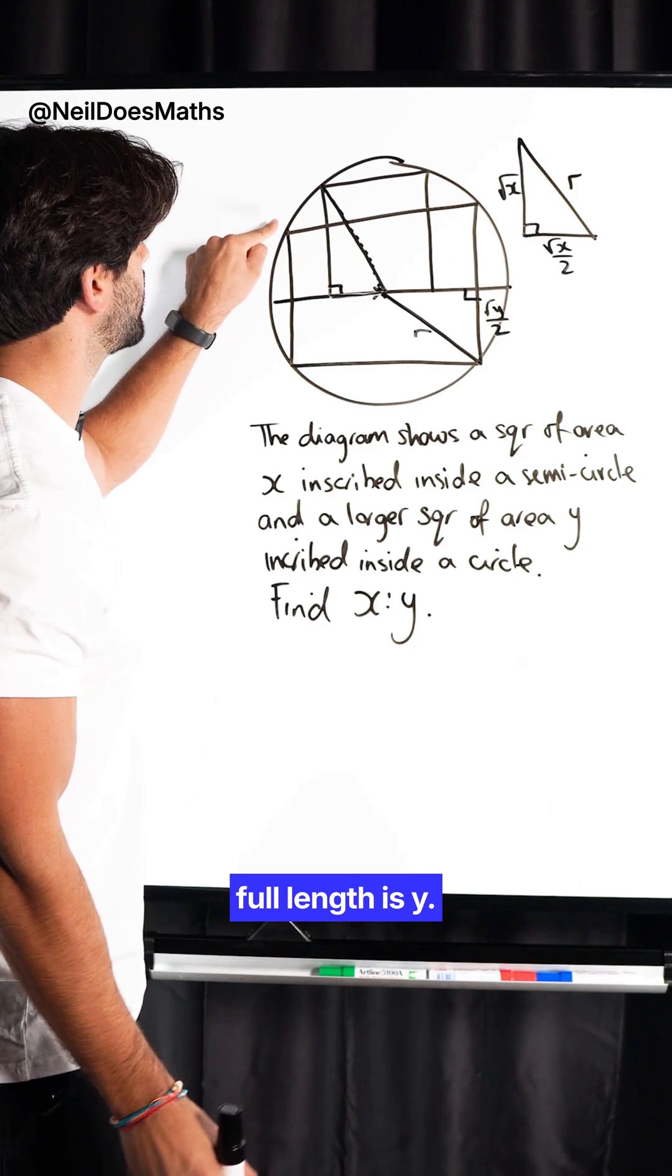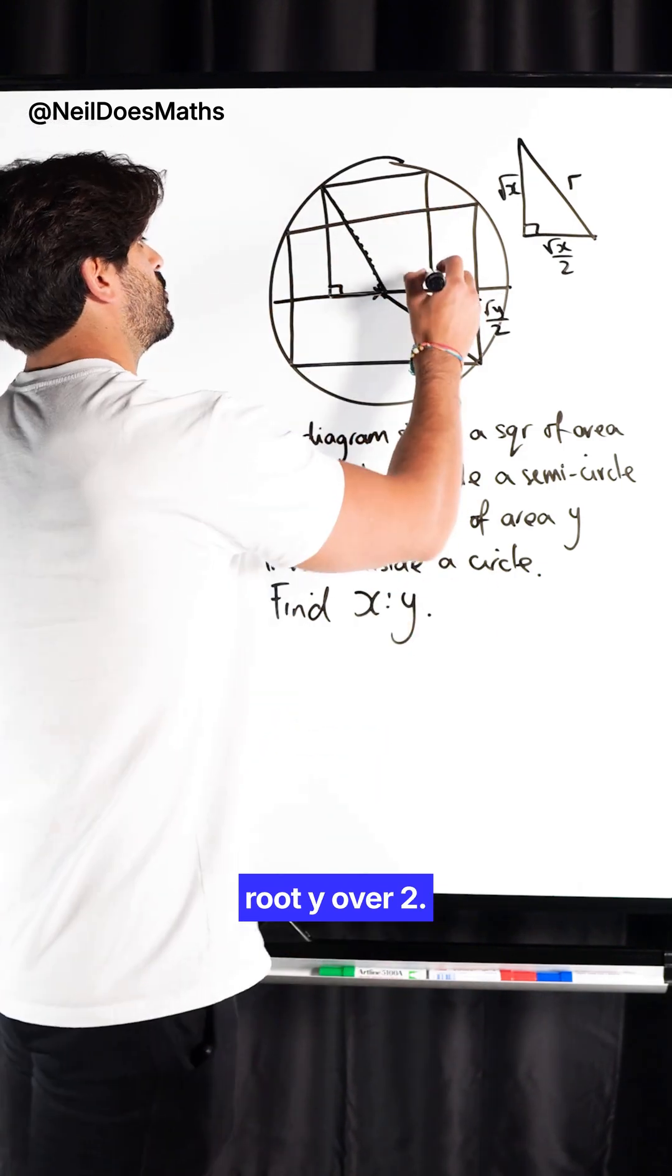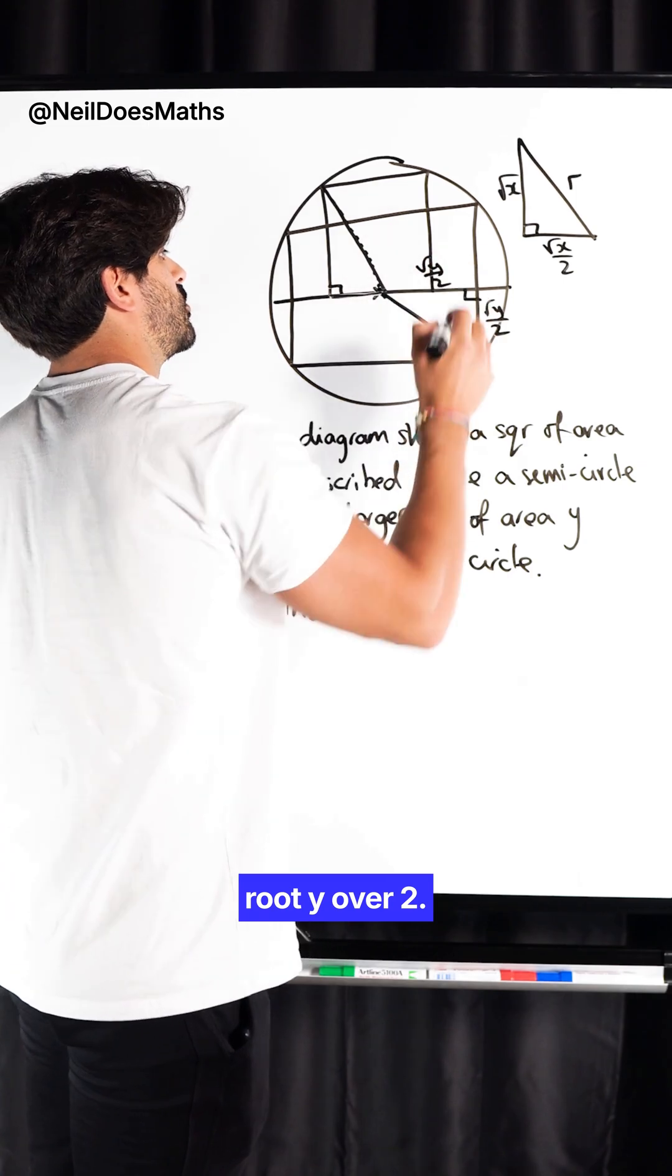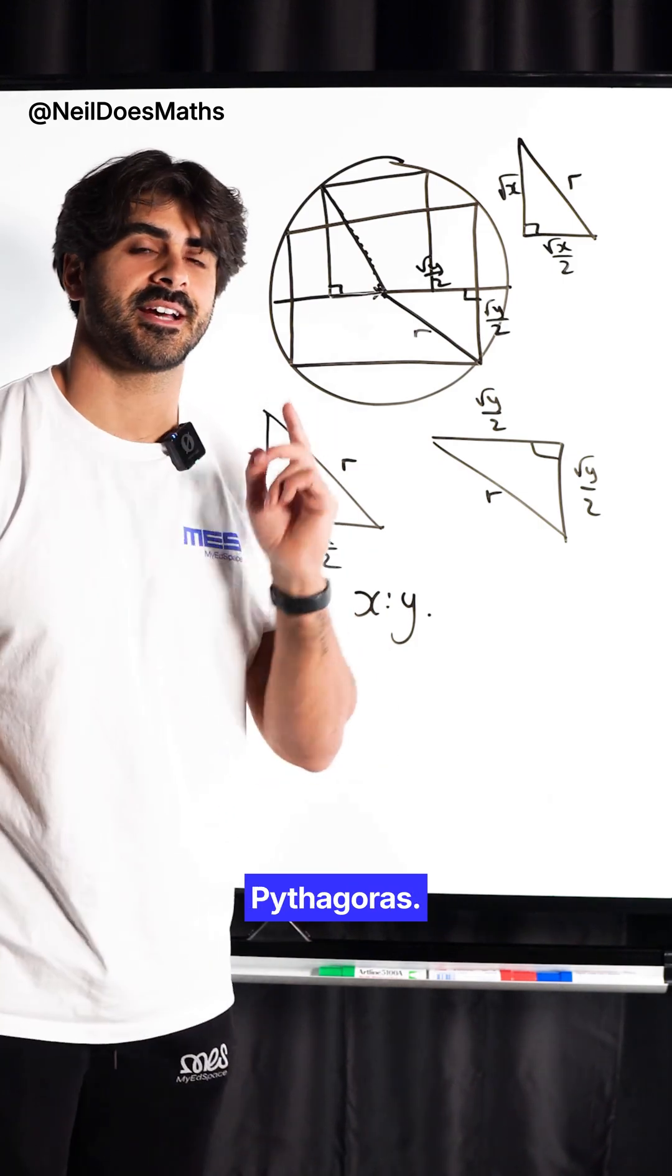So, here we have this full length is root Y. So, this length here is root Y. Half of that, root Y over 2. So, now that we have both of these triangles, what connects all these lengths? Pythagoras.